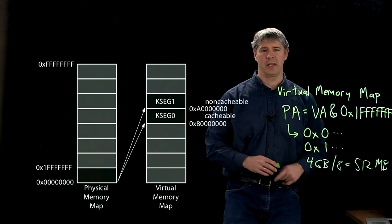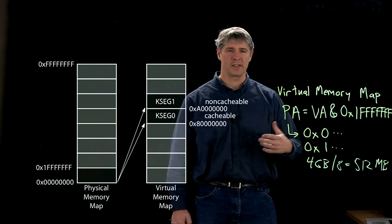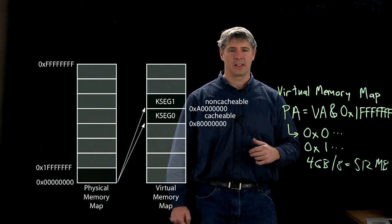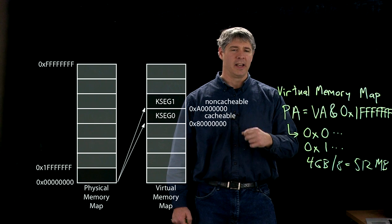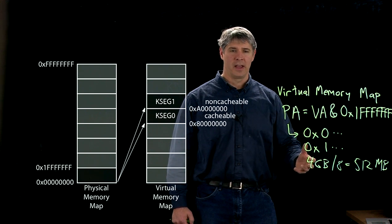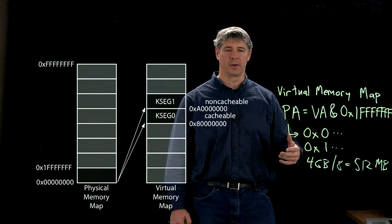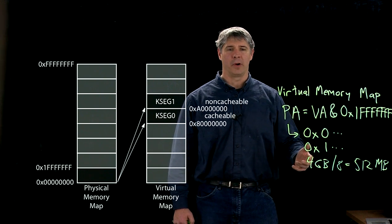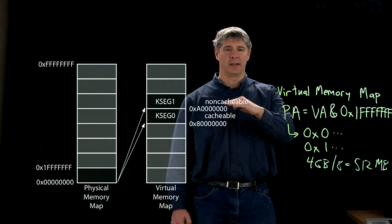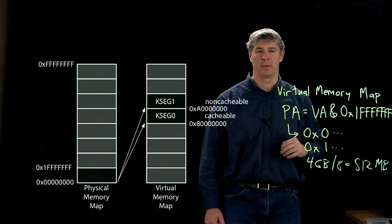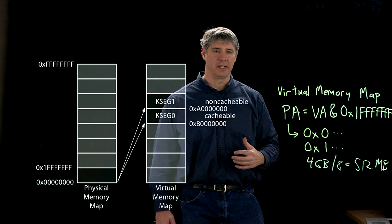If the CPU is requesting something at a particular virtual address, it will first check whether that virtual address begins with an 8 or 9. If so, it will look in the cache first, and if it's not there, then go to program flash to find it directly. Whereas if it begins with an A or B — in other words, it lives in kseg1, kernel segment 1 — then it knows it's not going to be in cache.